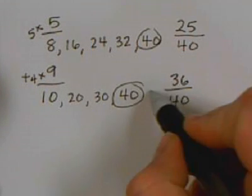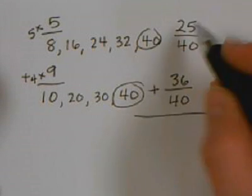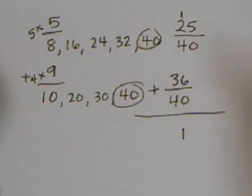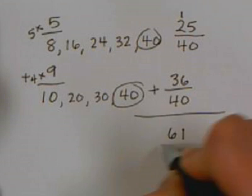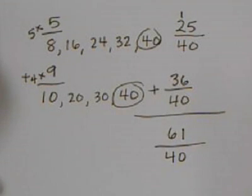Then they need to add these two fractions together, 36 and 25. Well, 6 plus 5 is 11. 3 plus 2 is 5, plus one more is 6. 61/40. This fraction is very big, but the students will need to go through and simplify this fraction and then change it into a mixed fraction.